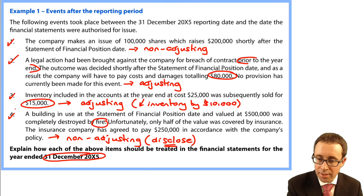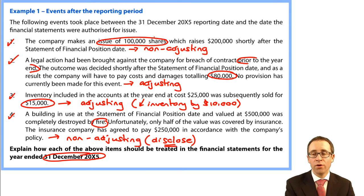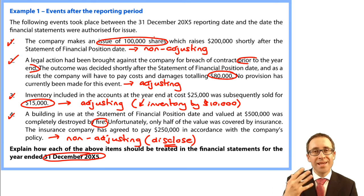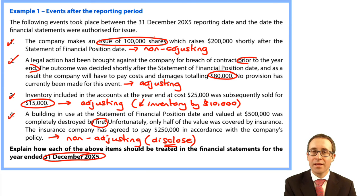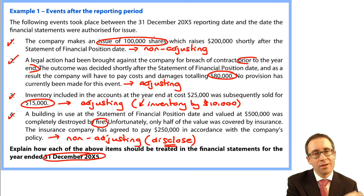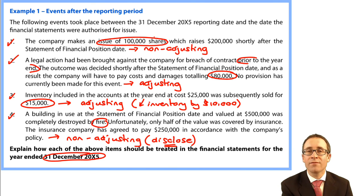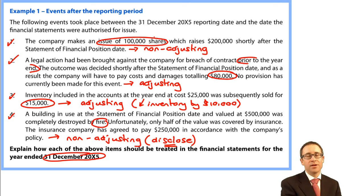So to add to your list: an issue of shares is non-adjusting, and a fire or flood is also non-adjusting. There are more comprehensive lists out there if you wish to find them, but what's covered here should be more than enough to help you through. Practice the questions, and after a while you'll be looking for a question on events after the reporting period to appear in the exam — because it should be pretty straightforward.